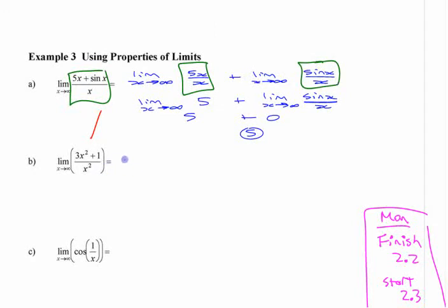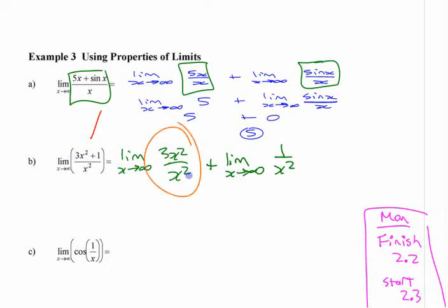You can break this function apart, and it's going to be the limit of each of those separately. So 3x squared over x squared, and plus the limit of 1 over x squared. The reason that helps is because on this side, 3x squared over x squared, you can simplify.